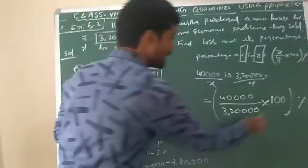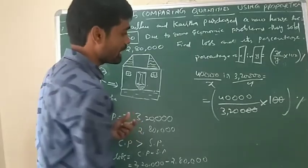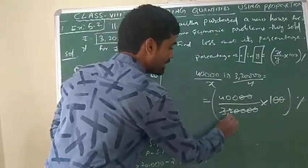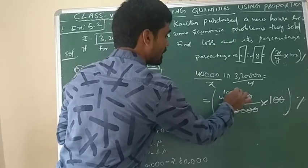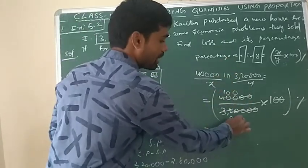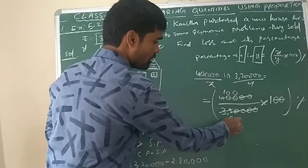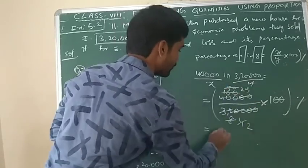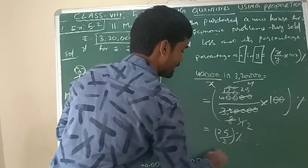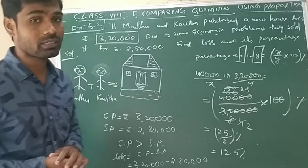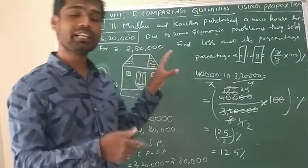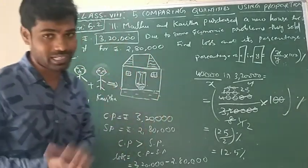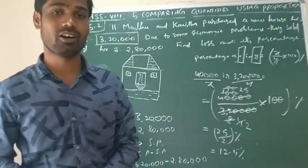Very simple simplification: two zeros cancel, and then four zeros cancel, giving 25 by 2, which is 12.5%. So they got a loss of 12.5%. Overall they spent 3,20,000 and received only 2,80,000, so the loss amount is 40,000 and the loss percentage is 12.5%.